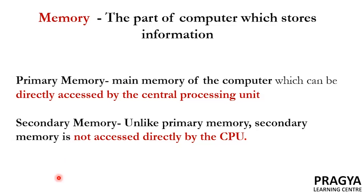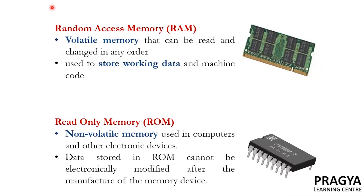Let's start with primary memory. The two most important types of primary memory are Random Access Memory or RAM and Read-Only Memory or ROM. Random Access Memory or RAM is a volatile memory that can be read and changed in any order, and it is used to store working data and machine code. So, what is meant by volatile memory?